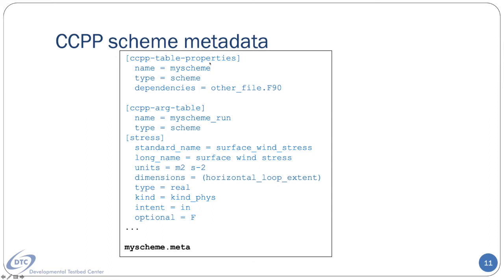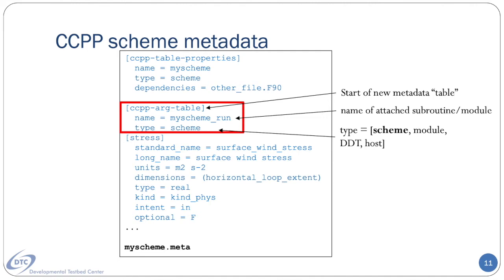A scheme's metadata is placed into a separate file with the same root name but with a .meta extension. The metadata file serves at least three purposes: first, to provide information to the CCPP framework about what data the scheme needs as well as what it outputs; second, to serve as documentation for scheme arguments; and third, to provide information to the CCPP framework about the scheme's build-time dependencies. The file uses a relaxed config file format with defined sections for each subroutine in the Fortran code with a CCPP-compliant interface. Each section begins with the name of the subroutine and a type that describes what kind of entity the metadata is describing — in this case, a scheme. Afterward, all variables that are part of a subroutine's argument list are included, with attributes for each variable following.